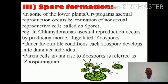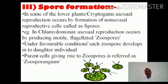The third method is spore formation. In some lower plants, particularly in the Cryptogams, asexual reproduction occurs by the formation of non-sexual reproductive cells called spores. In the case of Chlamydomonas, asexual reproduction is practiced using zoospores. These zoospores are motile and flagellated — they are capable of movement, which is why they are called zoospores, where 'zoo' stands for animal-like motile structures. The formation of zoospores occurs in a specialized structure called the zoosporangium.